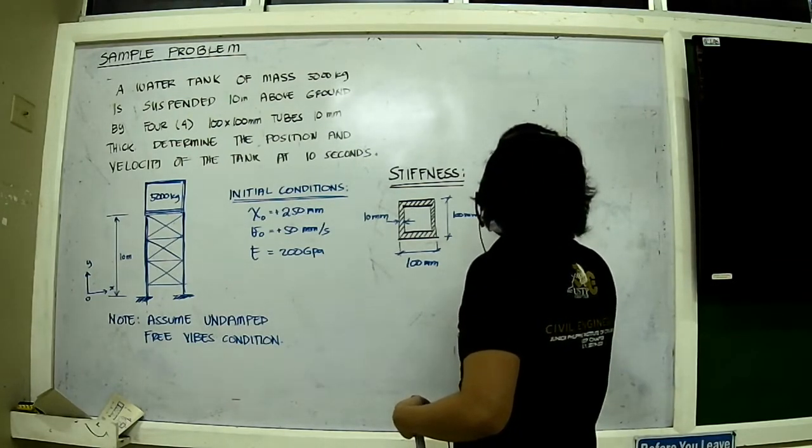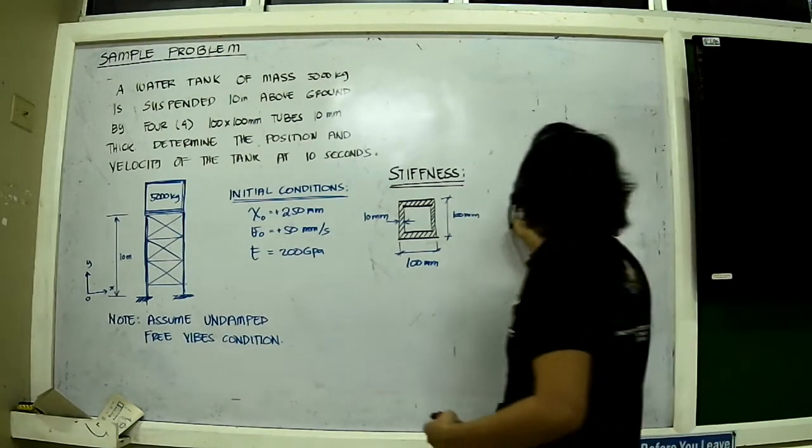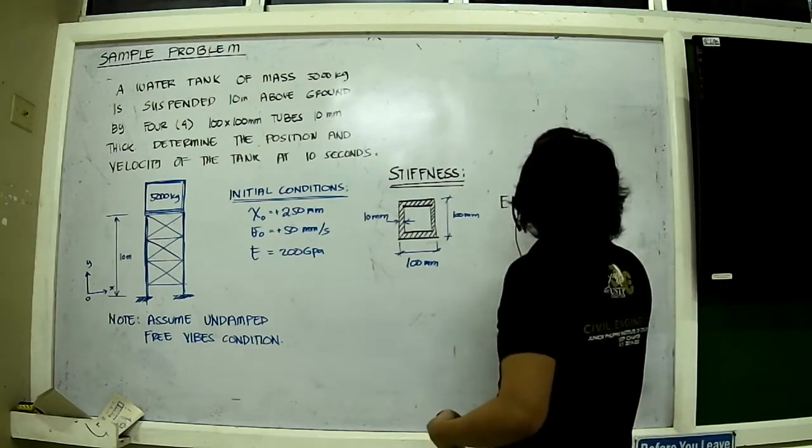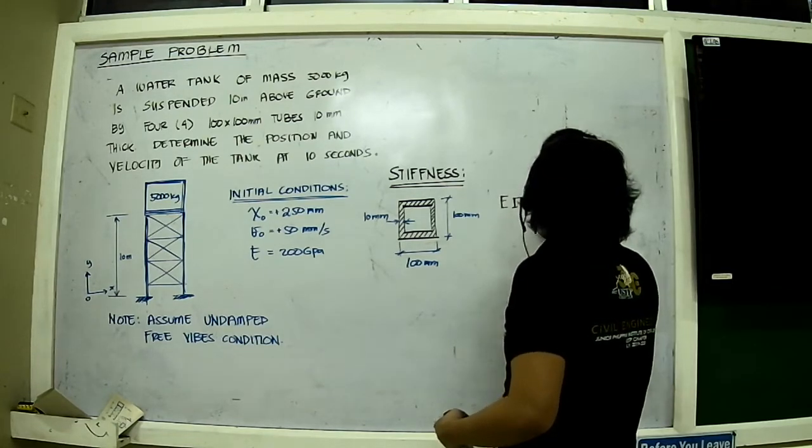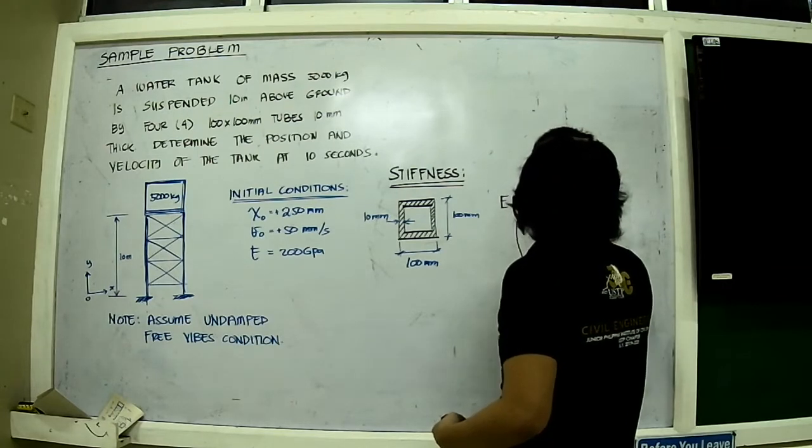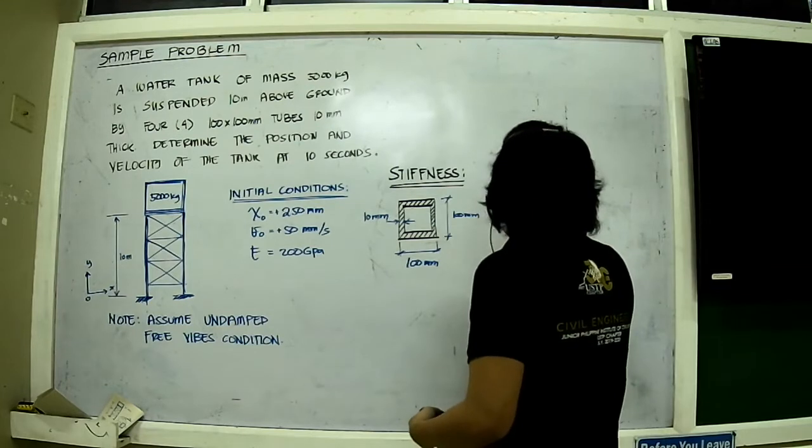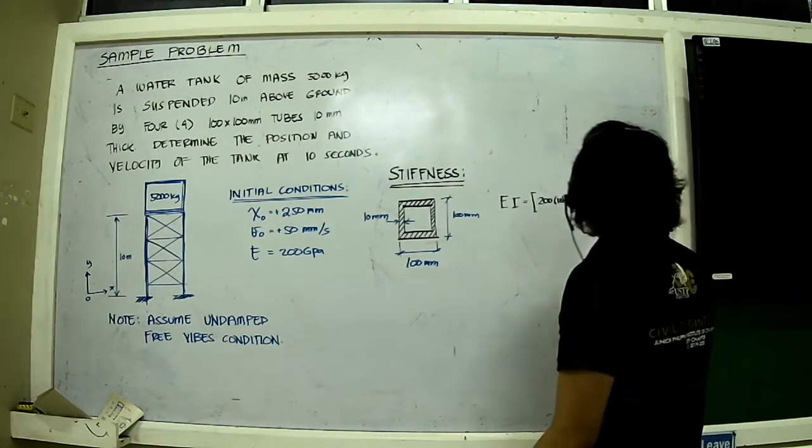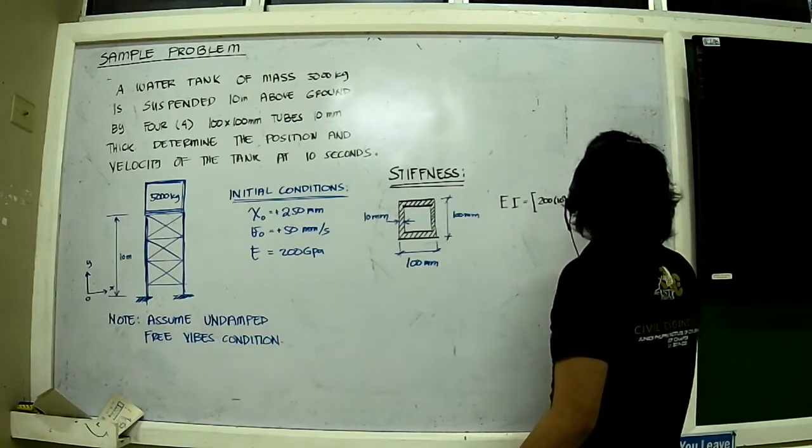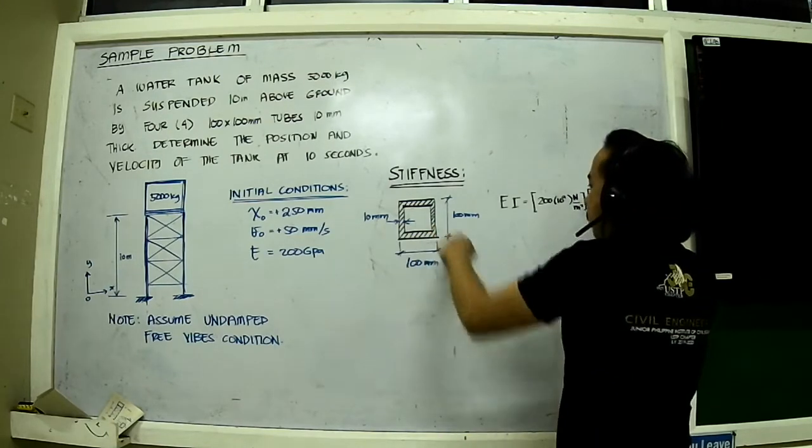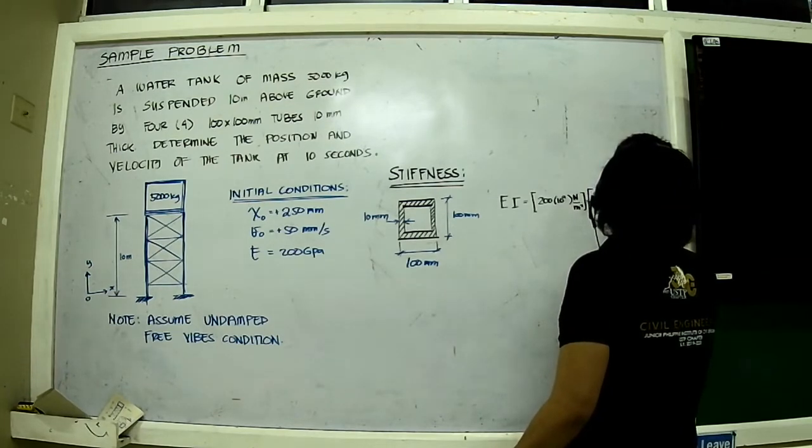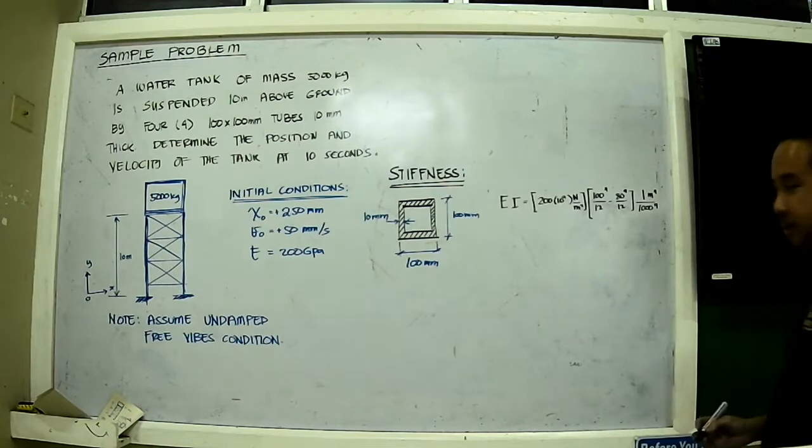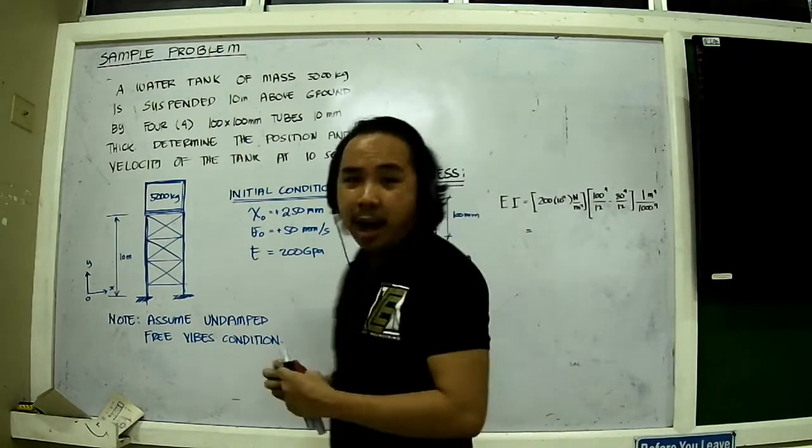Take note that we have a thickness of 10 millimeters. The inertia will be... Let me calculate EI directly. EI is equal to 200 times 10 to the power of 9 Newton per meter squared, multiplied by the inertia. The inertia is just a big rectangle minus the smaller one, so that is 100 to the 4th divided by 12 minus 80 to the 4th divided by 12, divided by 1000 to the 4th to achieve meters to the 4th.